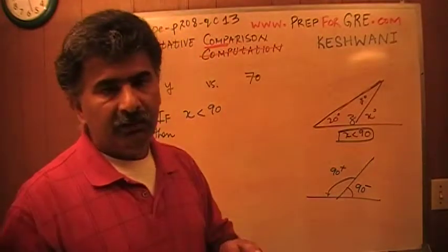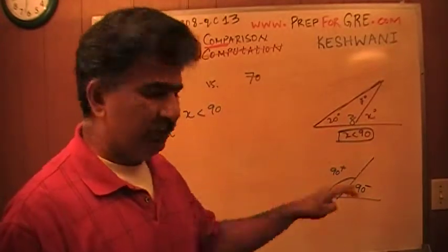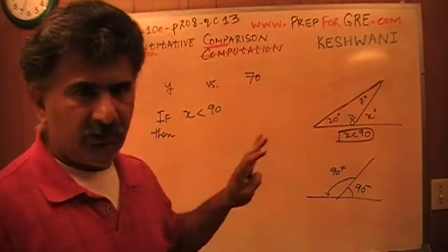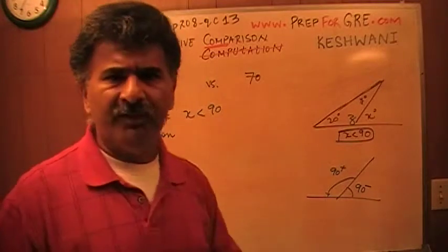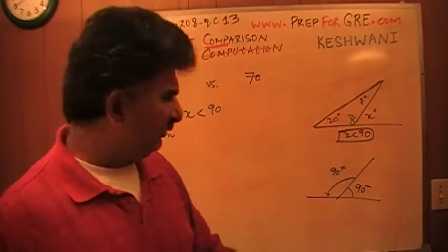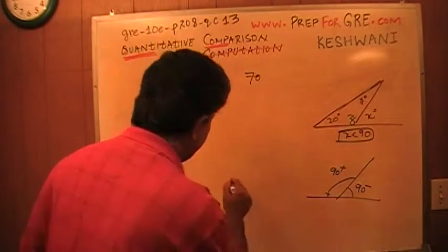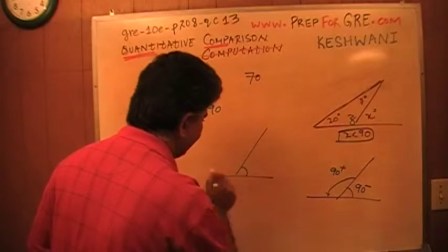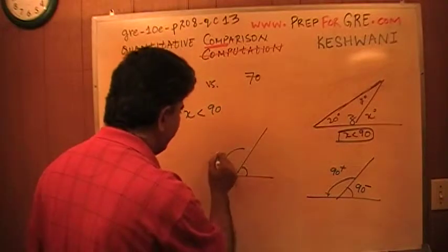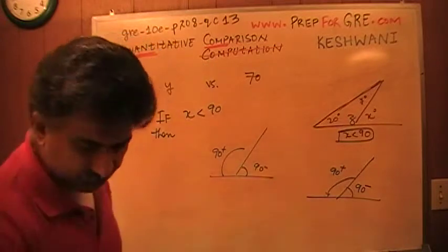Don't worry about the fact that these angles have names. One is called acute angle, one is called obtuse angle. There are some other terminologies in geometry. You don't need to know them. Nobody's going to give you extra credit if you do know them. Just realize the fact that the straight line is 180 degrees. And therefore, if I have a straight line, and if this angle is less than 90, then this one would have to be more than 90.